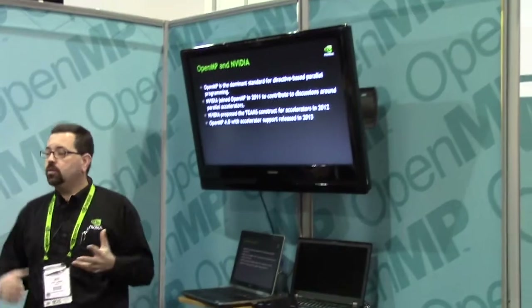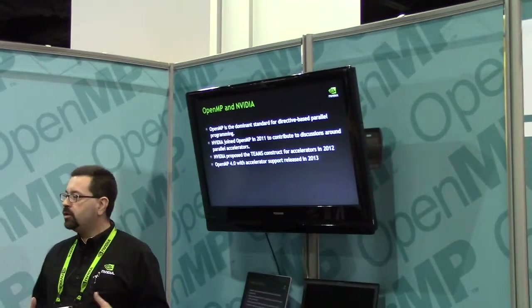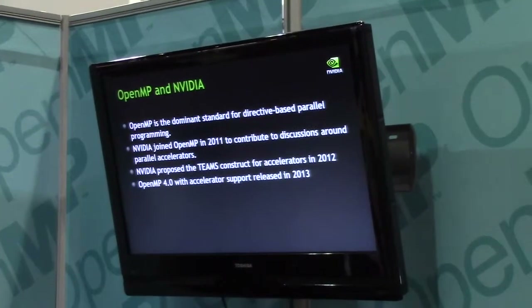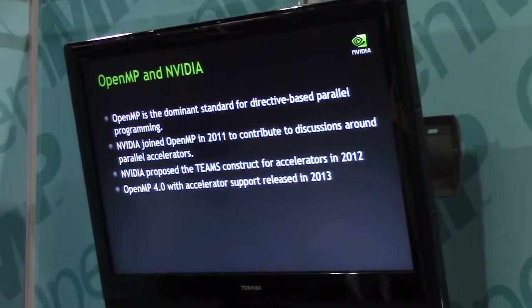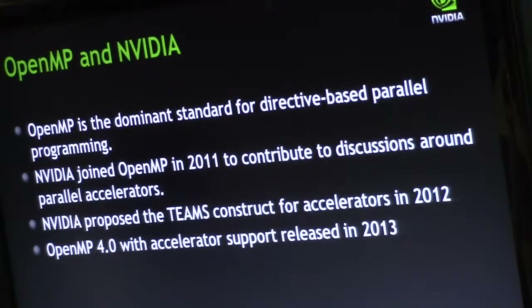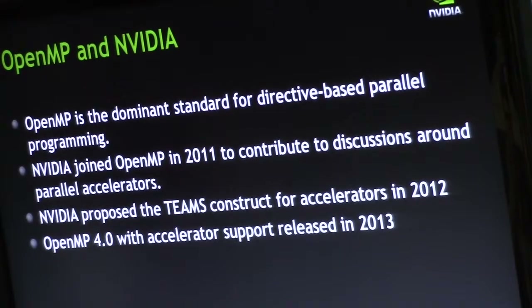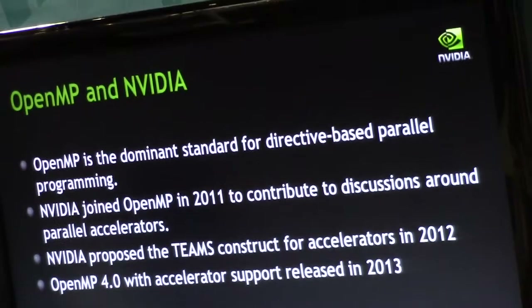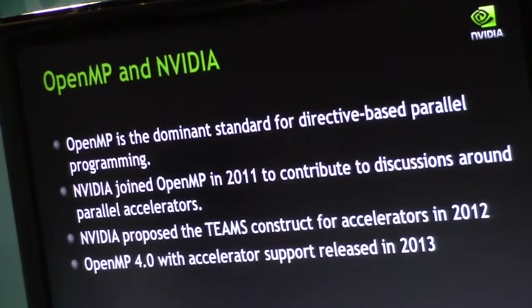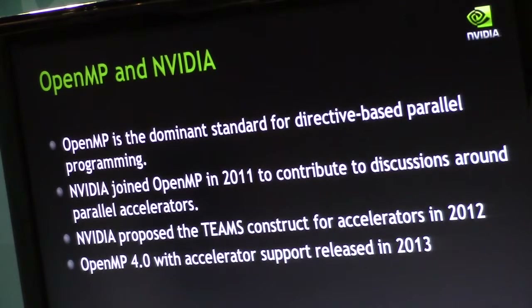OpenMP is of course the standard when you want to do parallel programming with directives. It's been around now for more than 15 years, and especially as multi-core CPUs have become commonplace, it's become a really important skill to know OpenMP and to use OpenMP to have parallelism within your codes. In 2010, there were a lot of discussions going on about how OpenMP can be used with accelerators, with GPUs, with things like Xeon Phi, with DSPs — any of these things that are not CPUs but additive accelerators. We wanted to be part of that discussion because we have a lot of experience with parallel processors and attached parallel processors.